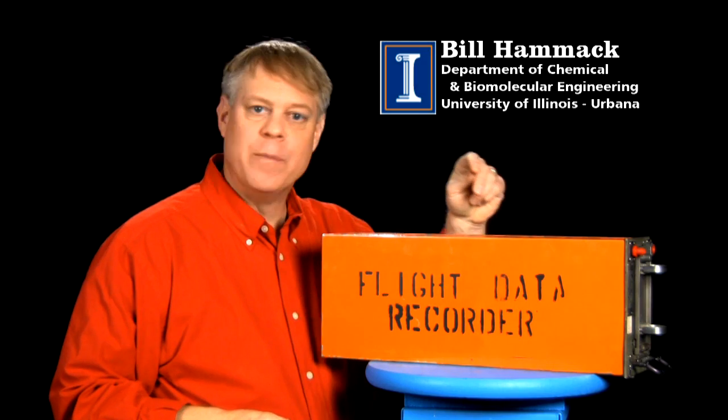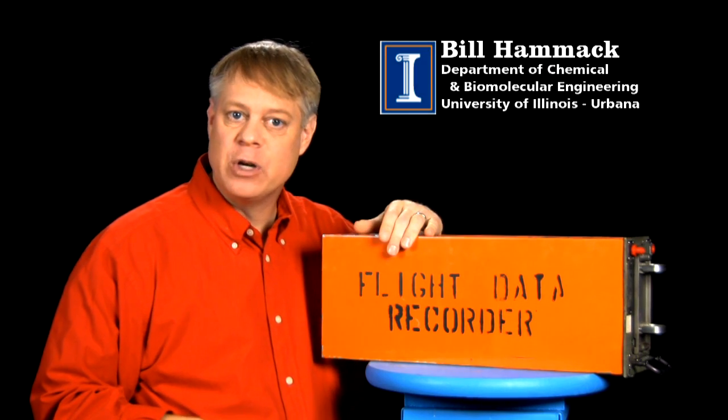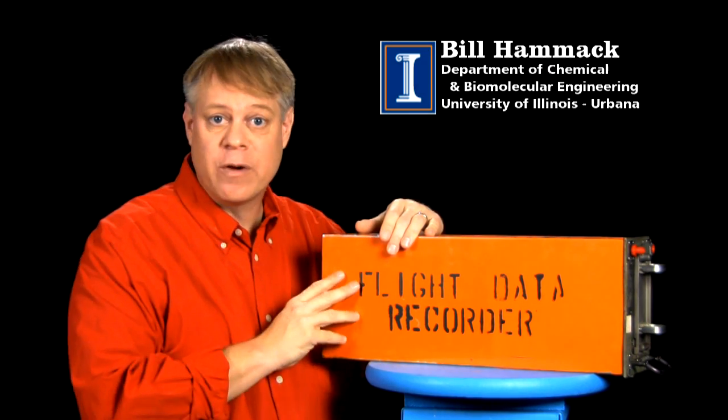If an airplane goes down, it's the infamous black box that gives us information about the plane's speed and altitude before the crash.